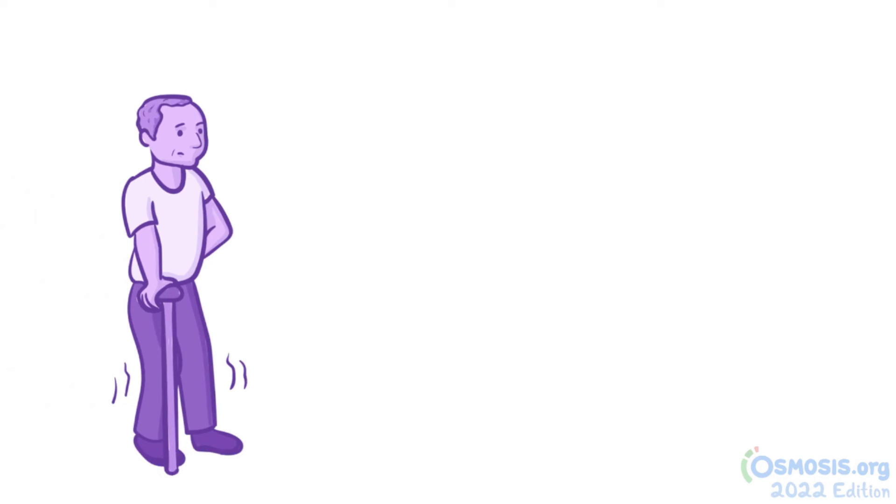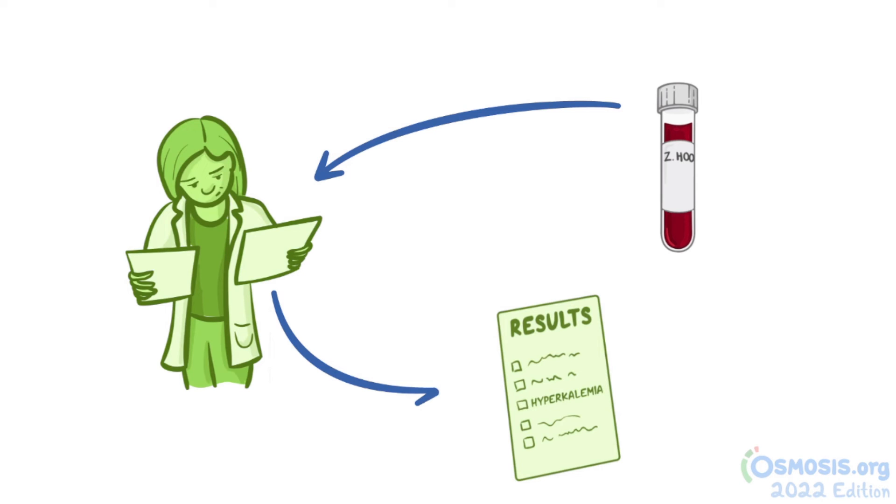When the lab results came in, they showed hyperkalemia, high potassium levels. So Dr. Pearson arranged for Zach to get admitted to the hospital and started ordering some medications to help lower his potassium levels.